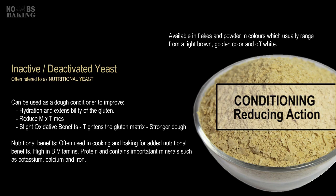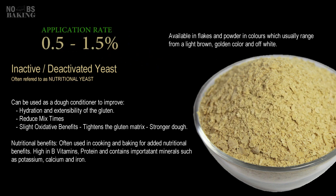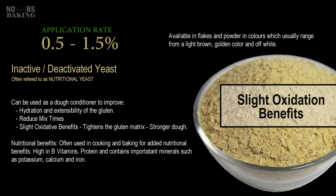Its reduction effect on gluten protein provides reduced mixing requirements, reportedly up to 30% depending on the amount used. Standard application rates are 0.5% to 1.5% based on flour. Besides the reducing effects, it also contributes slight oxidation benefits that contribute to a stronger overall dough.